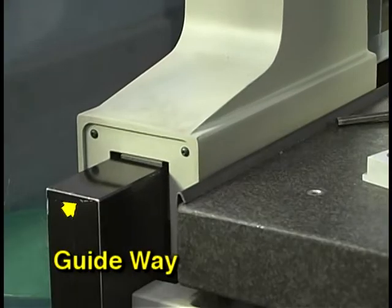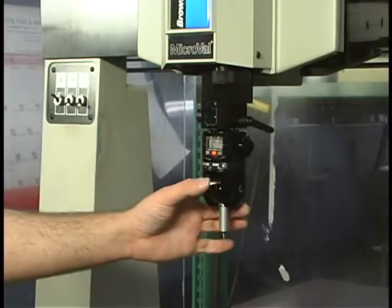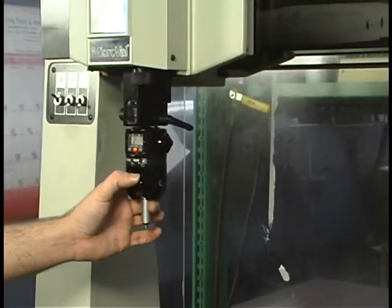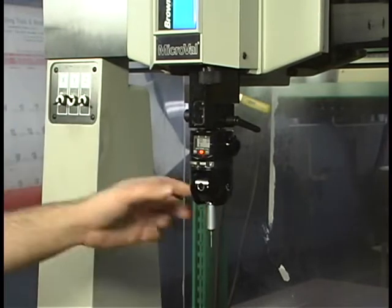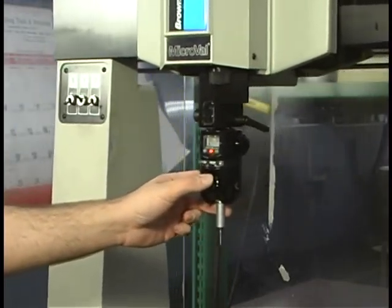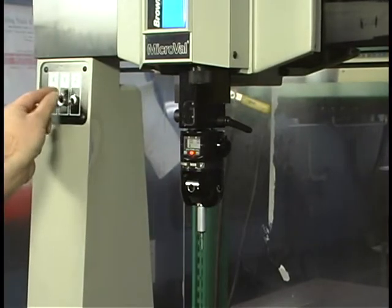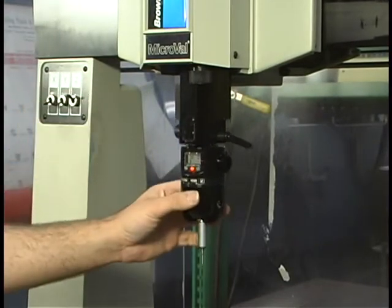All axes of movement are on guideways. On this CMM, the probe column and bridge do not actually touch the guideways during normal movement. An air compressor supplies filtered air to allow the moving surfaces to ride on a layer of pressurized air. This is called an air bearing.